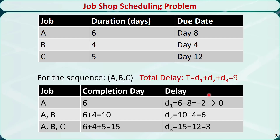The total delay of this sequence is T = D1 + D2 + D3 = 9 days. This is just one feasible sequence. We need to find the best sequence to process the jobs so that the total delay of the three jobs is the smallest.